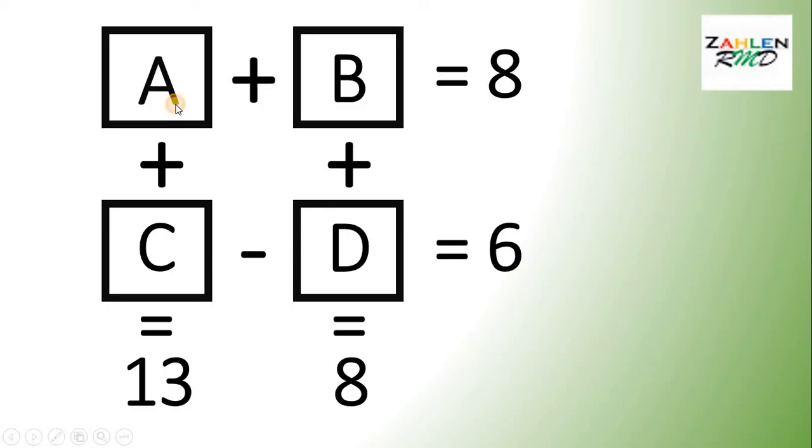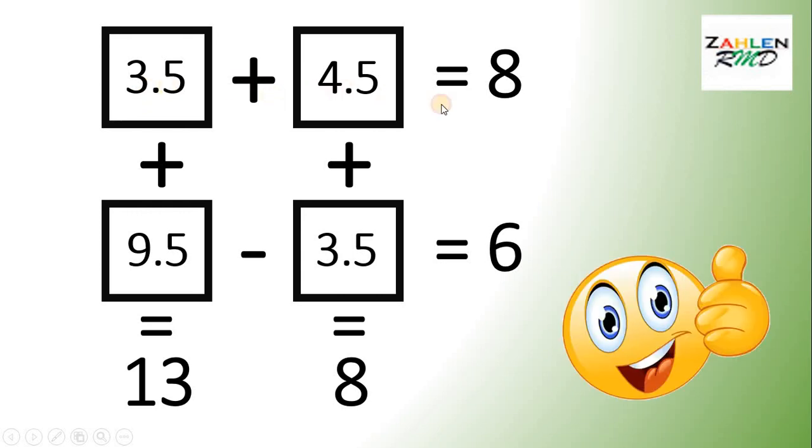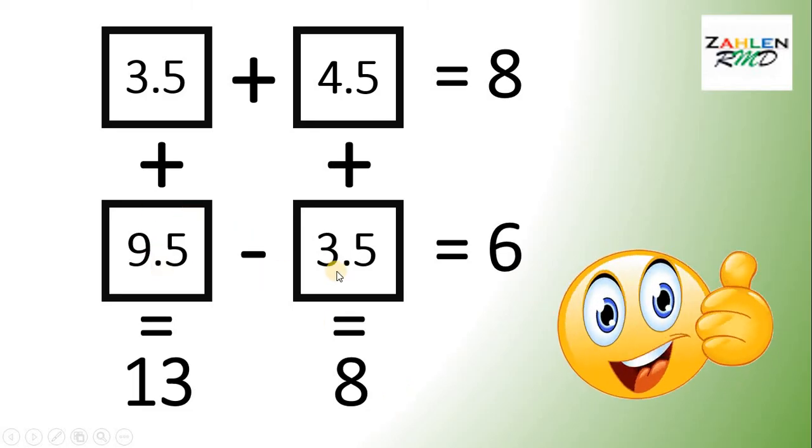So, again, our A is 3.5, B must be 4.5, C is 9.5, and D is 3.5. Now, let's check. 3.5 plus 4.5 will give us 8, and that's correct. 3.5 plus 9.5 is 13, this is also correct. 4.5 plus 3.5 is 8, this is also correct. And 9.5 minus 3.5 equals 6, and this is correct. And we're done.